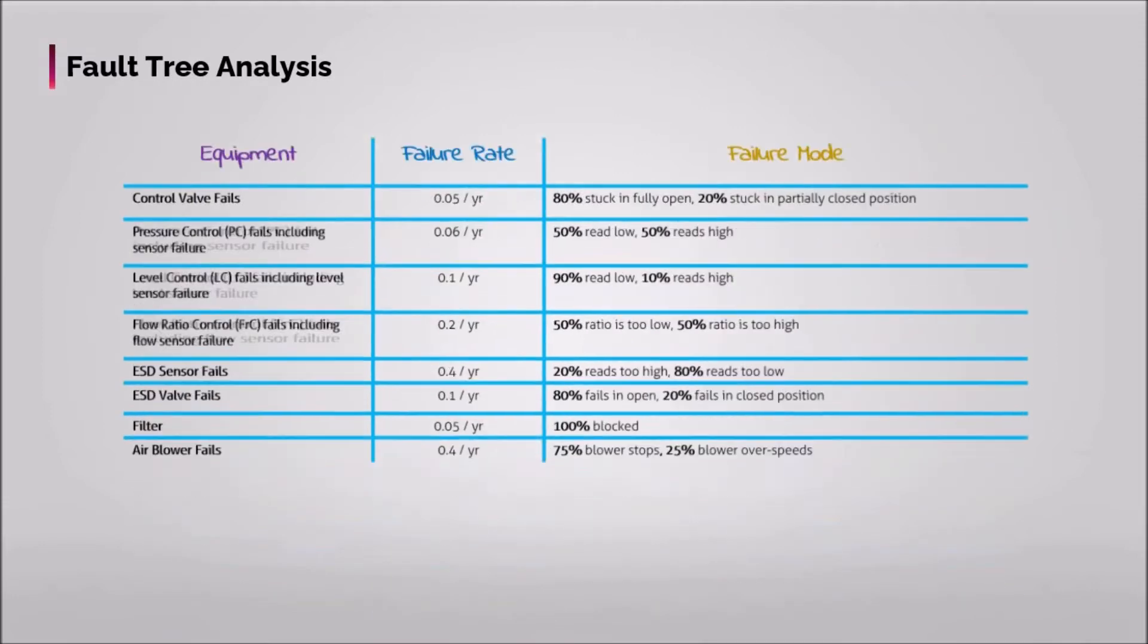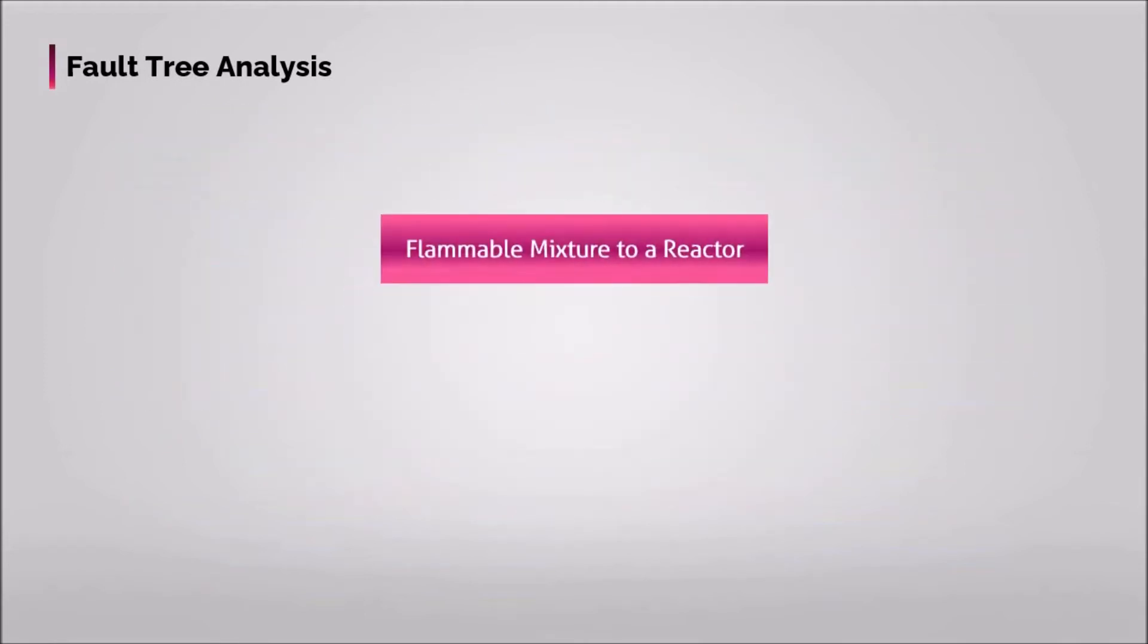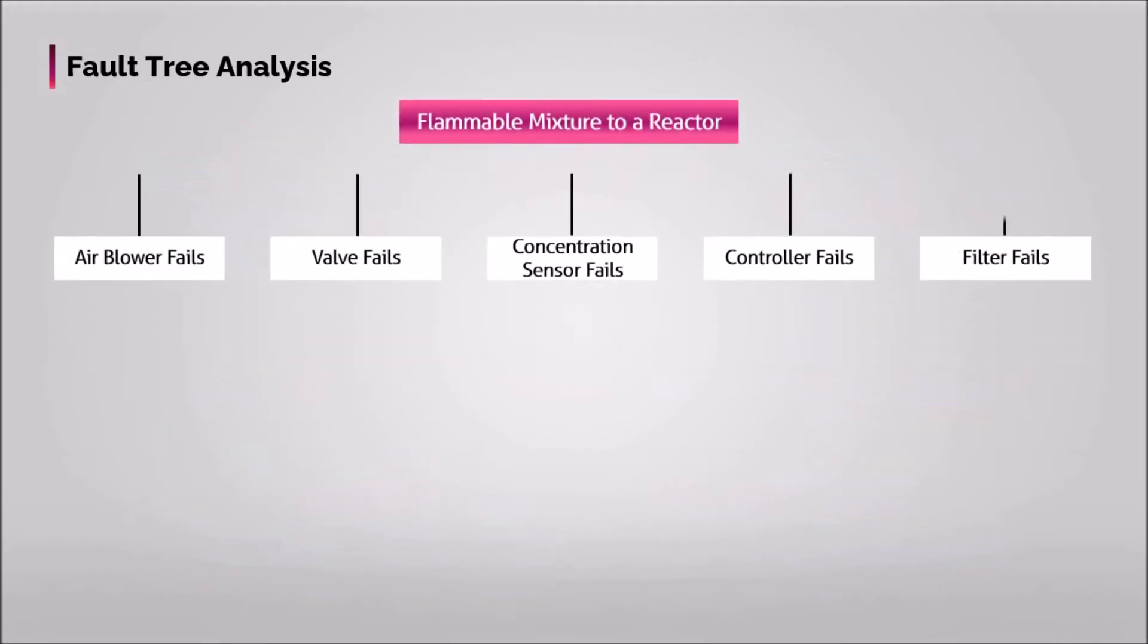Therefore, we're asked to define the frequency of the top event, that is flammable mixture to a reactor. Our precursors are air blower, valve, sensor, controller, and filter failures, which are connected to this top event with AND gate.